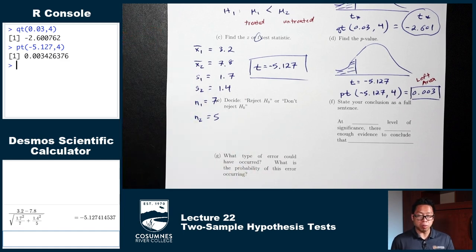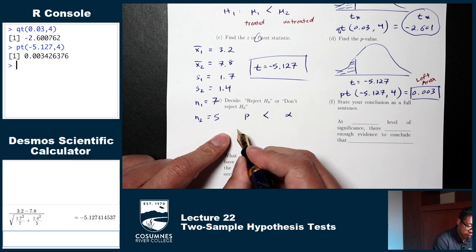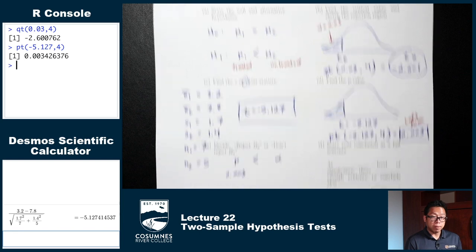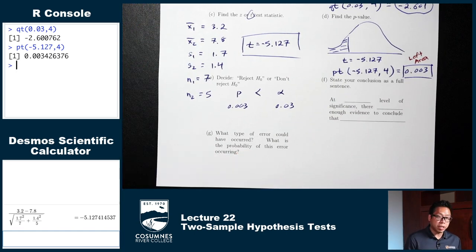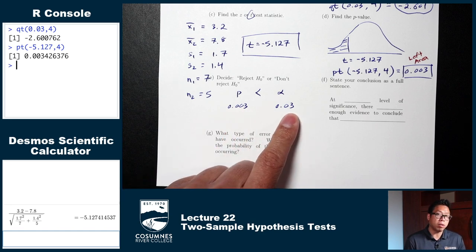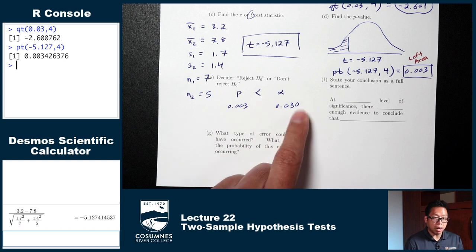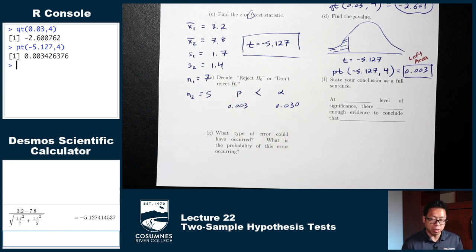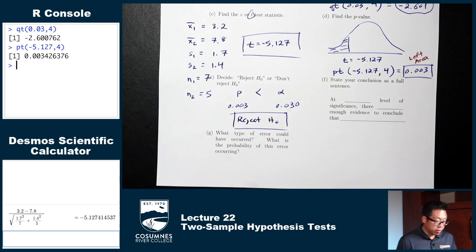Part E: reject or don't reject. Look at the P value and see if it's less than alpha. P value is 0.003, alpha is 0.03. Adding a zero: 0.003 versus 0.030 — basically 3 versus 30. Is the P value less than alpha? Yes, 3 is less than 30. So we reject H0.